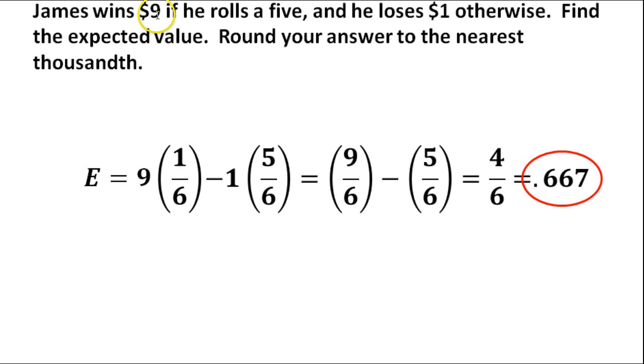Basically though, we take the amount that he's going to win, multiply that by the probability that he's going to win that amount. Then if he's going to lose money, we're going to subtract whatever it is he's going to lose. In this case, it's $1, times the probability that he's going to lose that dollar.